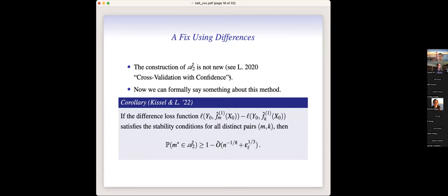This way of constructing the model confidence set is not entirely new — I had the idea five years ago and published a paper on it. But at that time I wasn't able to rigorously characterize how the confidence set would behave theoretically. Now, with the V-fold cross-validation Gaussian comparison, I can finally say something about this difference-based model confidence set. All we need is that if the pairwise difference loss function satisfies the stability conditions required in the sub-Weibull Gaussian comparison for cross-validation, then the optimal model is covered in the confidence set with probability 1 - alpha - o(1).